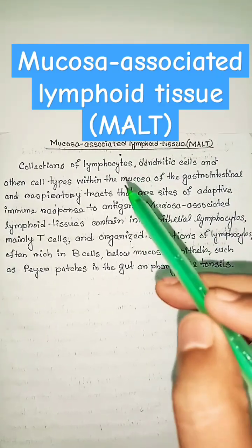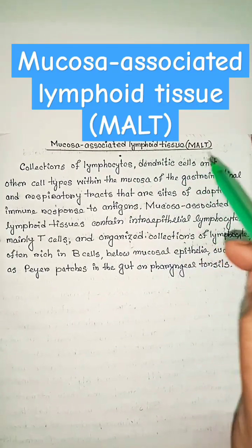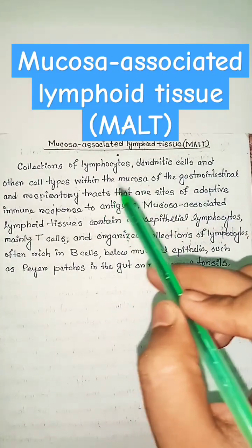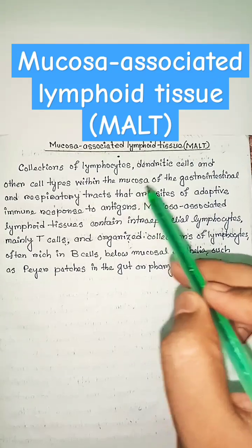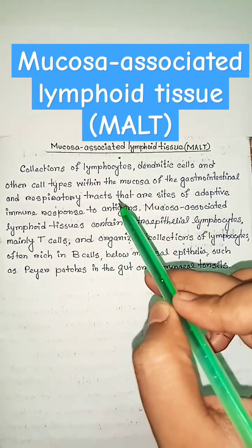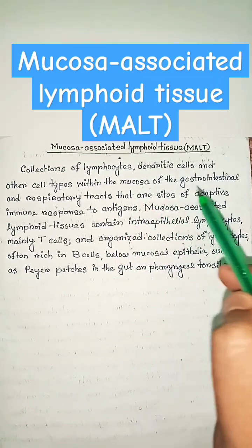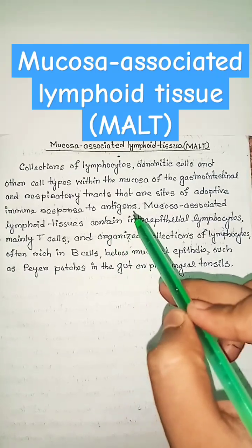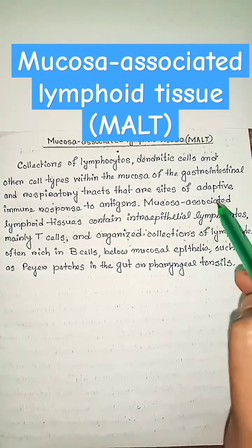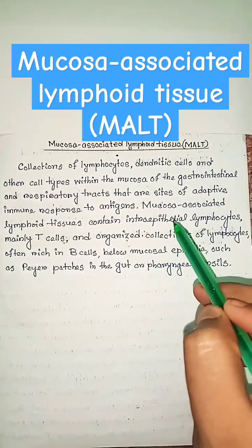What is mucosa-associated lymphoid tissue, or MALT? Collections of lymphocytes, dendritic cells, and other cell types within the mucosa of the gastrointestinal and respiratory tracts that are sites of adaptive immune response to antigens.